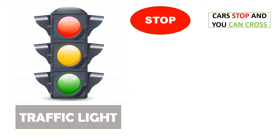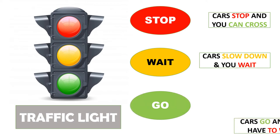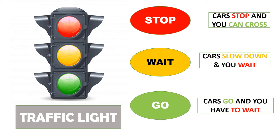When it shows yellow, the cars slow down — they go very slow — and you wait. And when the traffic light shows green, the cars can go and you have to wait.